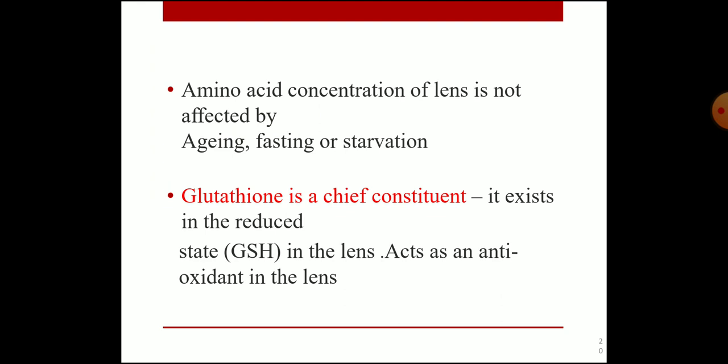Glutathione is a chief constituent of the lens. It is a tripeptide — gamma-glutamyl-cysteinyl-glycine — composed of glutamic acid, glycine, and cysteine. It exists in the reduced state (GSH) in the lens and acts as an antioxidant. Reduced glutathione is essential for the lens as an antioxidant.